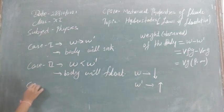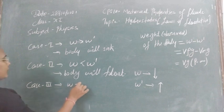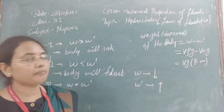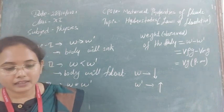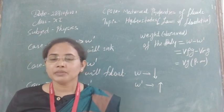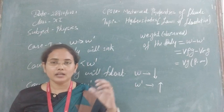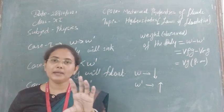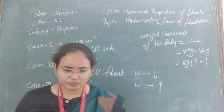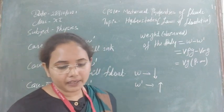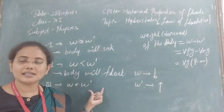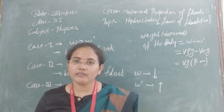Case 3: When W equals W'. In this condition the observed weight of the system becomes zero. No net force acts on the body — the upward force is balanced by the true weight. So the body remains at rest wherever it is immersed, floating partially above or partially below the surface depending on where it was placed. The body can be at rest at any position in the liquid.